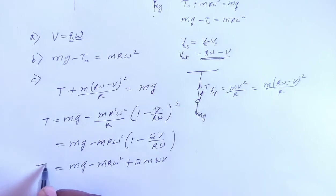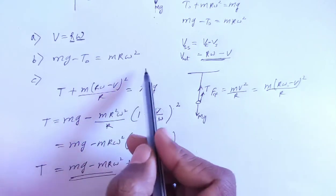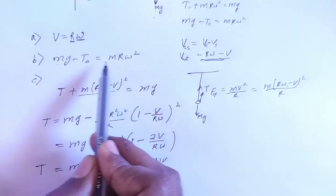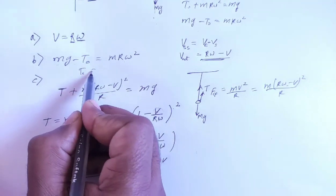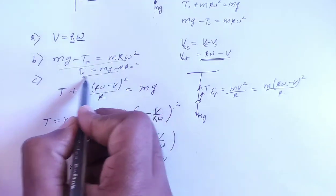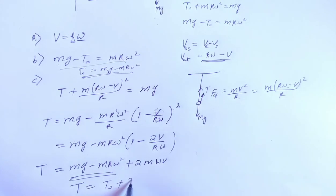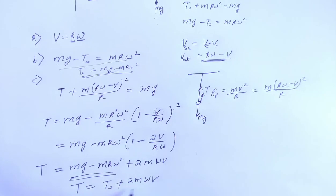This is your T. From the previous equation, mg minus m R omega² equals T0. So the solution is T equals T0 plus 2m omega v. Thank you.